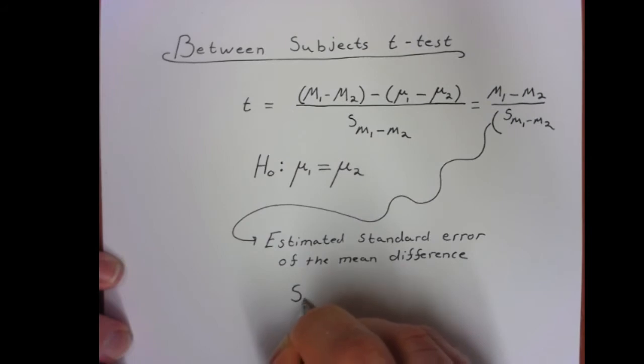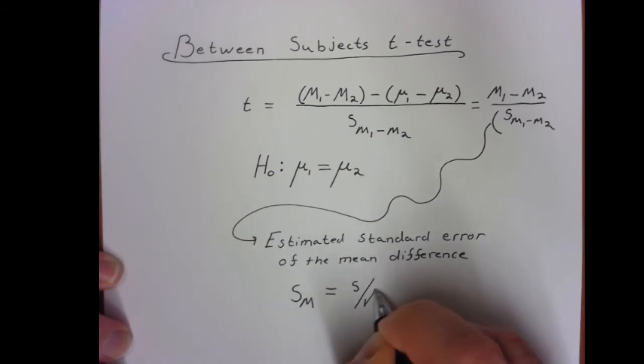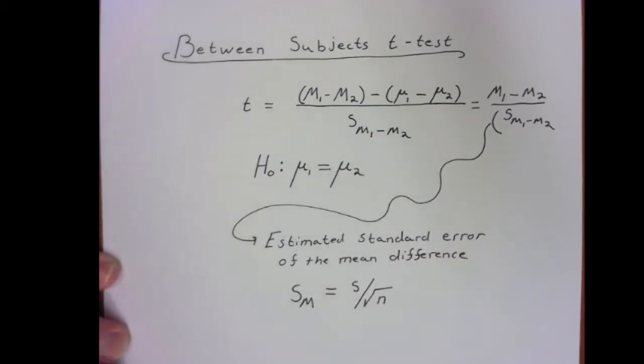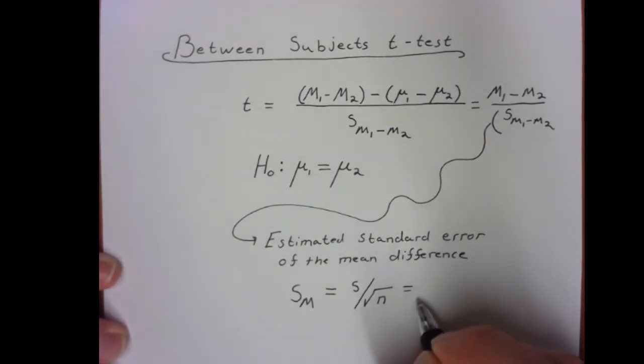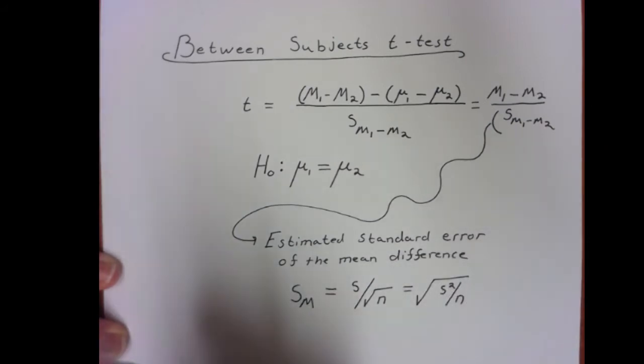So you may remember that just the standard error of the mean is your standard deviation divided by the square root of n. Now, we could rewrite that algebraically to be the square root of variance divided by n.